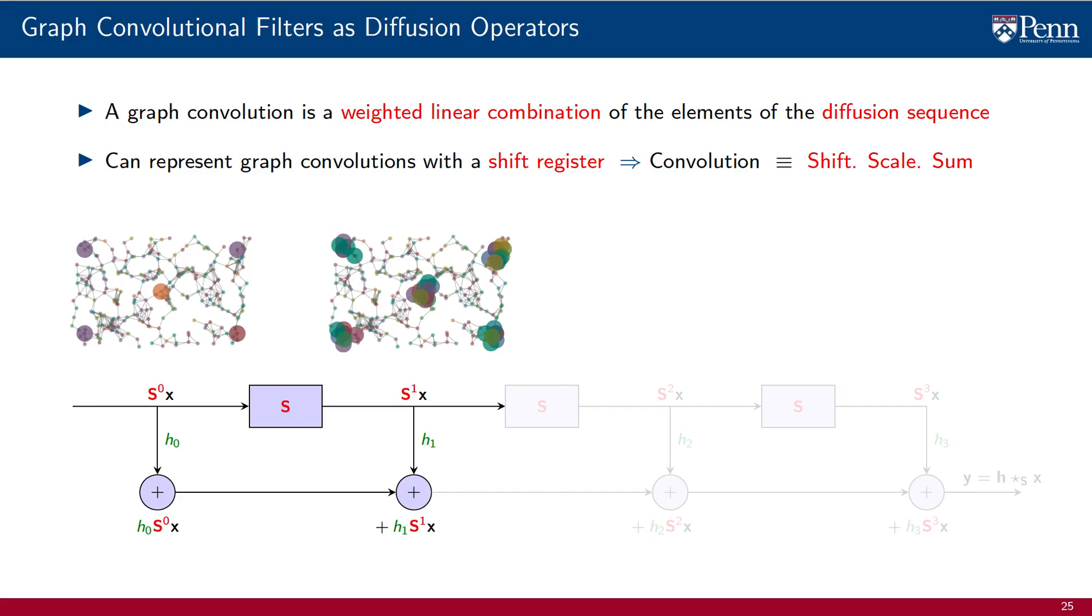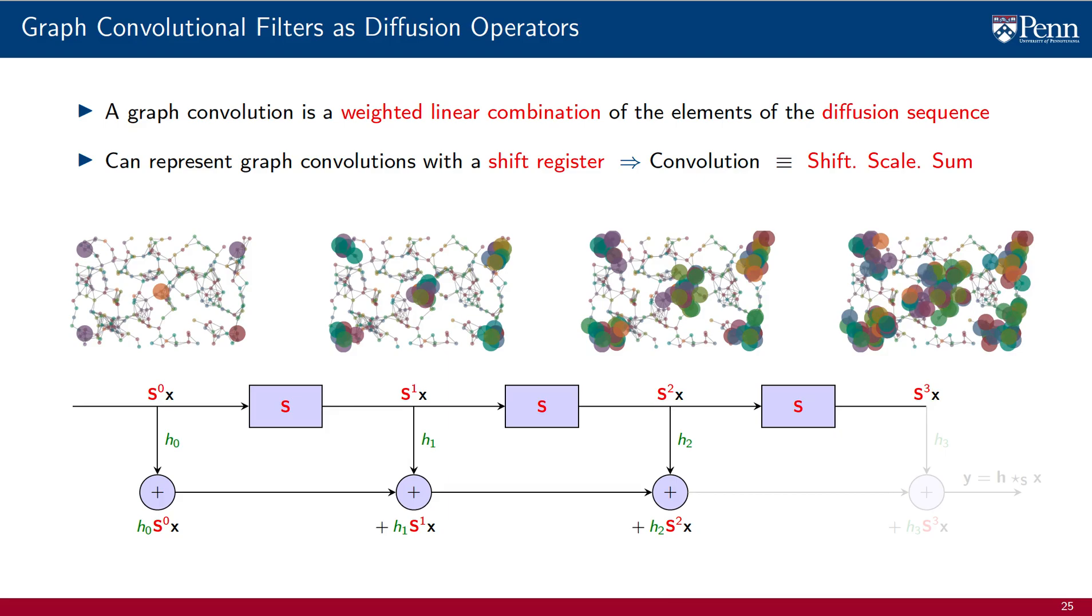We accumulate, if you wish. We multiply by S a second time. This is shifting. It produces entry S^2 of the diffusion sequence, the signal S to the power of 2 times x. We scale this by h_2 and we sum towards the output. We multiply by S once more, another shift. It produces entry 3 of the diffusion sequence, S to the power of 3 times x. We scale by h_3 and sum towards the output.